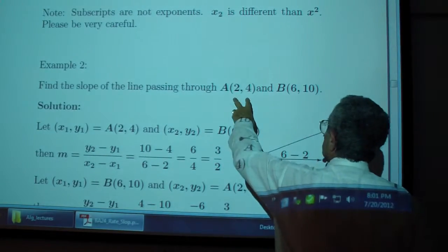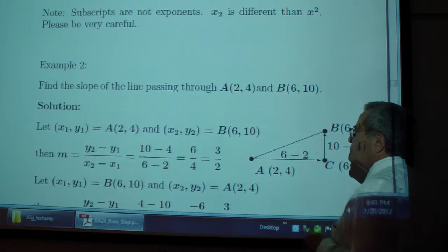Example 2. Find the slope of the line passing through A(2, 4) and B(6, 10).